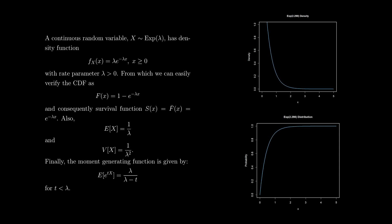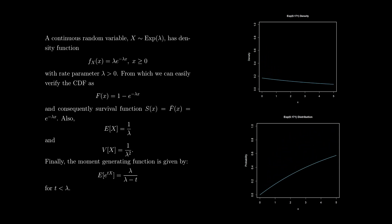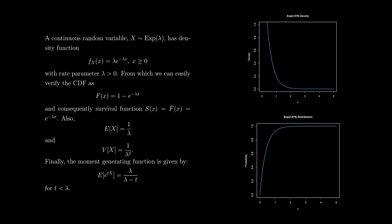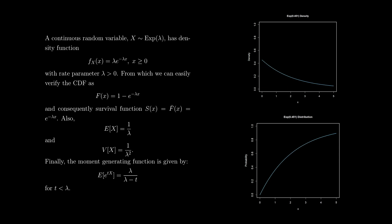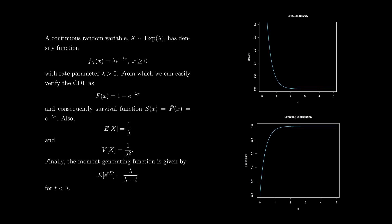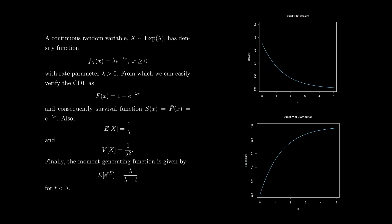Finally, we have that the moment-generating function of this distribution is given by a very simple expression. We're talking about the moment-generating function because we're dealing with a continuous random variable — defined as the expectation of e^(tx), where t is some dummy variable. For this distribution, it happens to be lambda divided by (lambda minus t), and this expression holds for t less than lambda. A very simple one to remember.